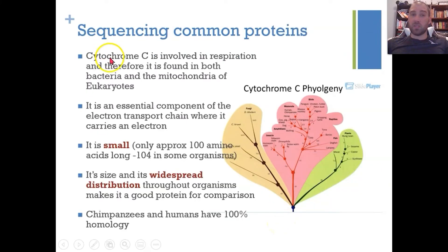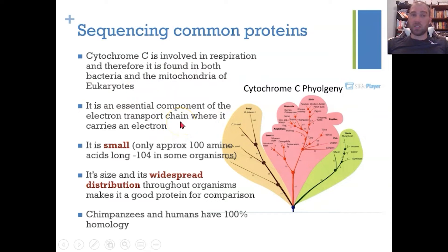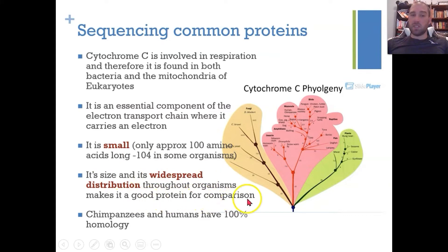Let's look at sequencing common proteins. Cytochrome C is a good example — it's involved in respiration and found in both bacteria and eukaryotes, specifically in the mitochondria of eukaryotes. It's an essential component of the electron transport chain in oxidative phosphorylation, carrying an electron. It's a very small protein, only 100 amino acids long (up to 104 in some organisms), and it's very well distributed, making it a good protein for comparisons between species.